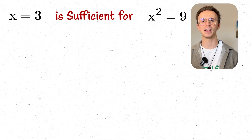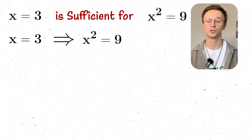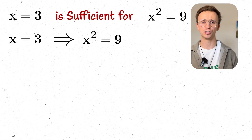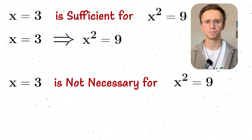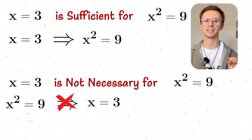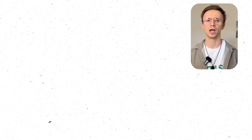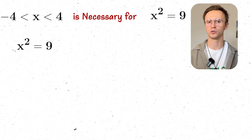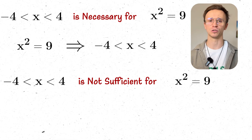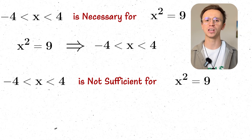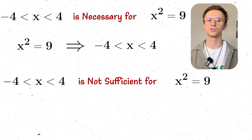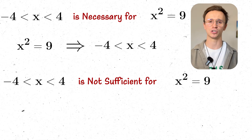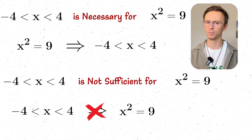Using the same x² = 9 example: x = 3 is a sufficient condition for x² = 9 — if we have x = 3 we can prove x² = 9. But it's not a necessary condition because x = -3 also gives x² = 9. Now, x being between -4 and 4 is a necessary condition for x² = 9, since both solutions are between -4 and 4. But it isn't sufficient — x = 2 is between -4 and 4 but 2² = 4, not 9. So between -4 and 4 is necessary but not sufficient.